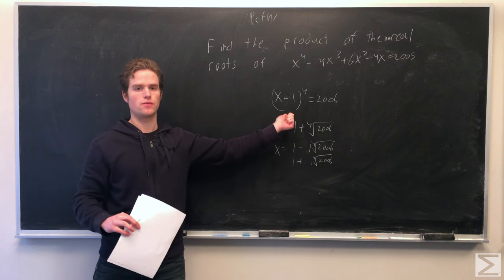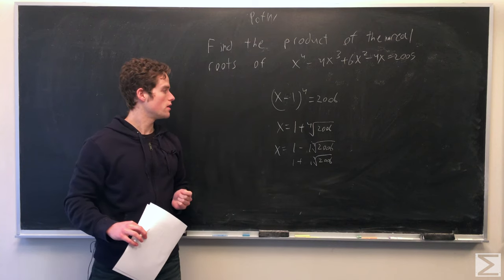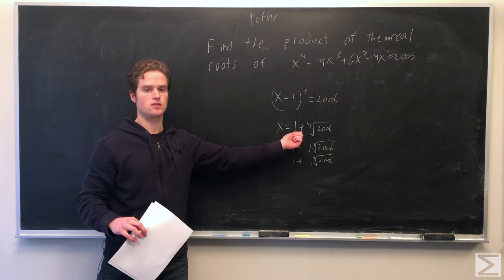So from this, we can quickly solve our equation for all four roots. And the four roots are just 1 plus 2006, the 4th root of 2006.